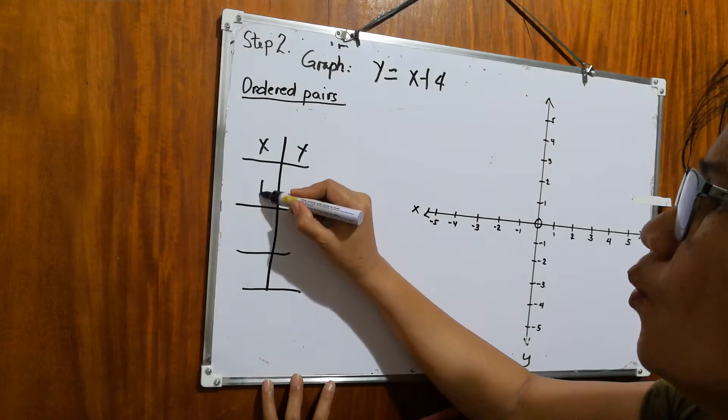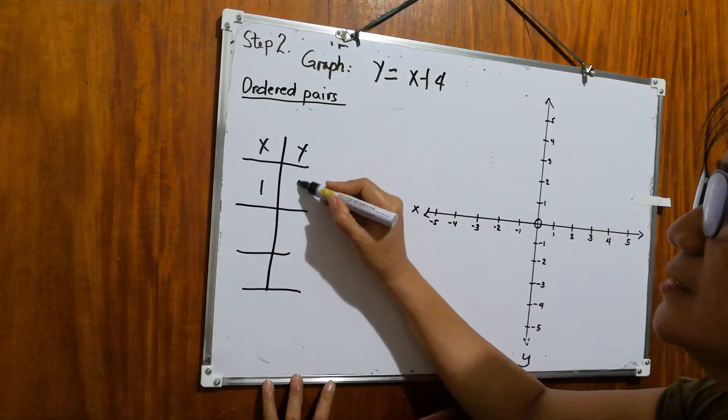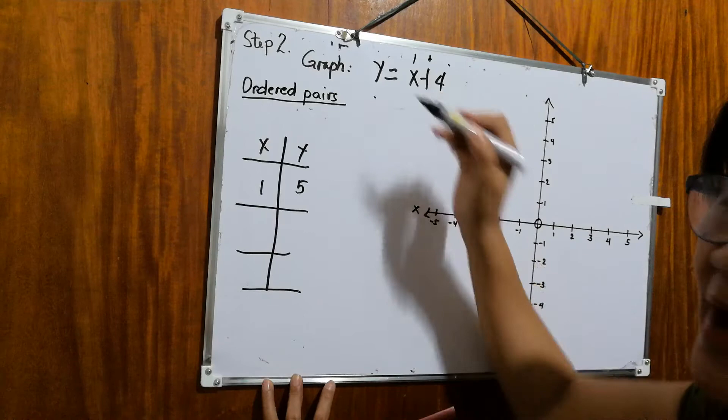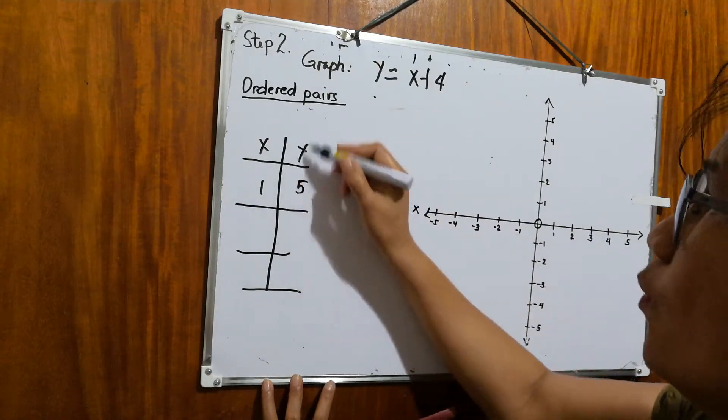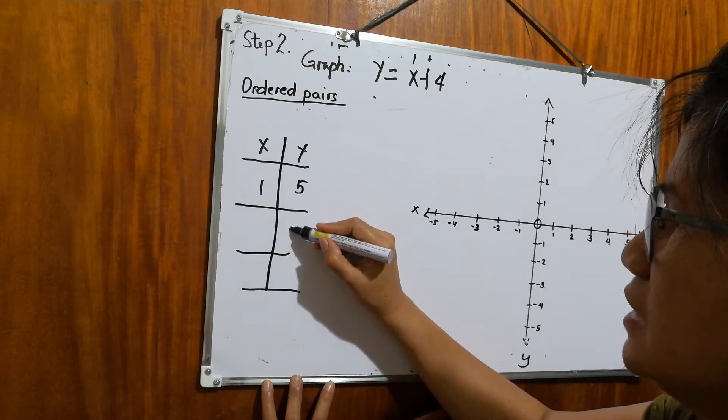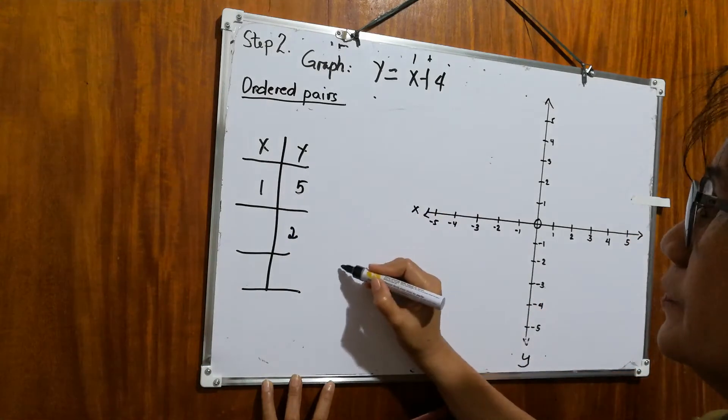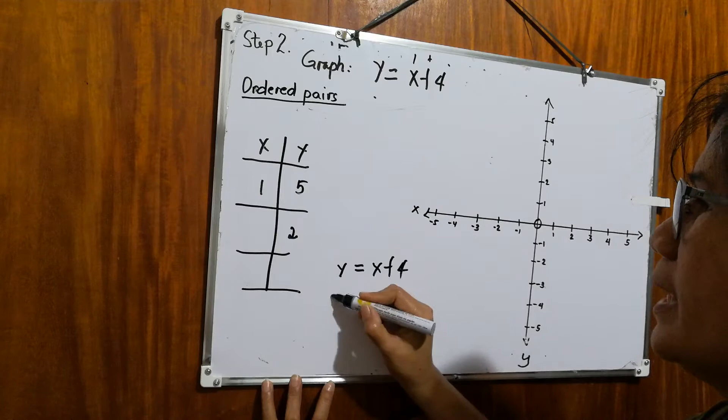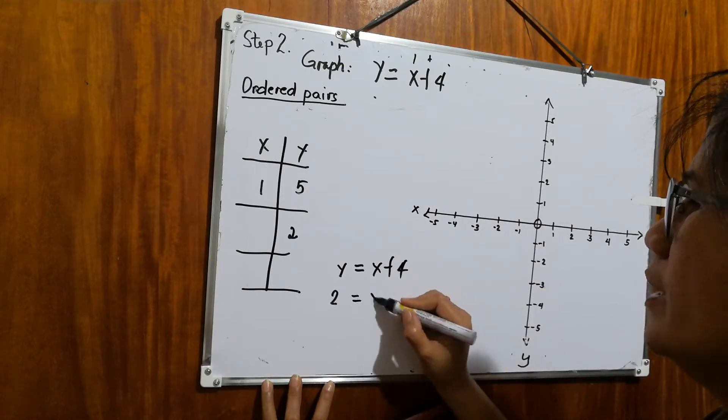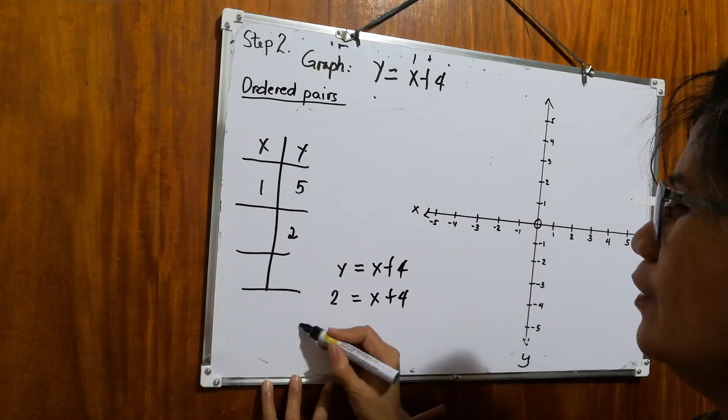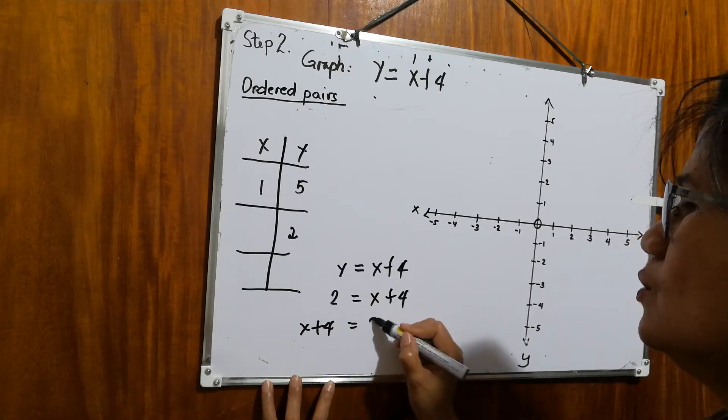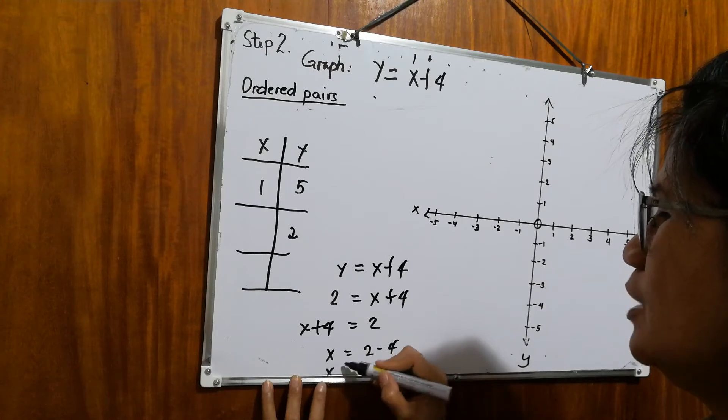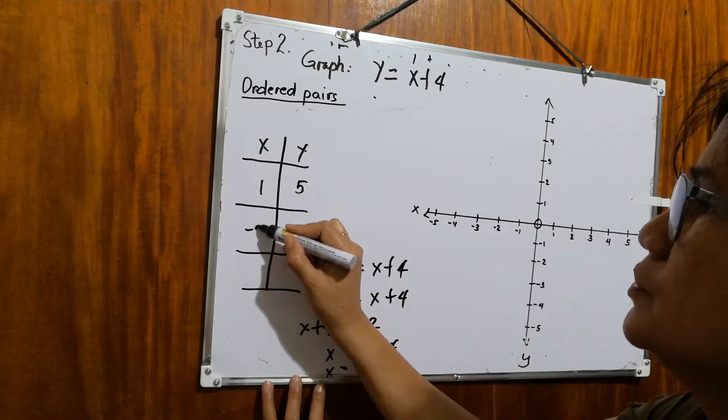If x is equal to 1, what is the value of y? The answer is 5, because 1 plus 4 equals 5. How about if we replace y? How about if y is equal to 2? Let's solve. y equals x plus 4 will become 2 is equal to x plus 4. Then reverse. x plus 4 equals 2. Bring down x equals 2 minus 4. So the value of x is negative 2.